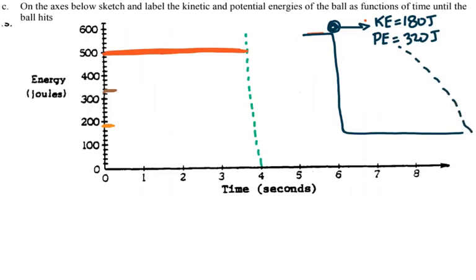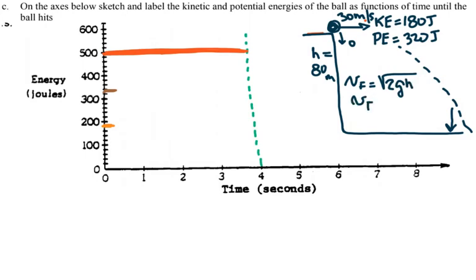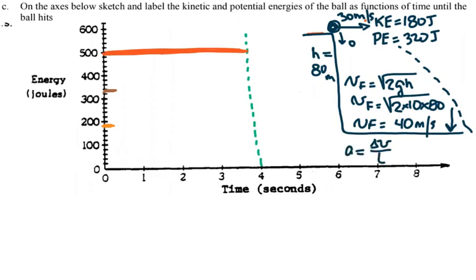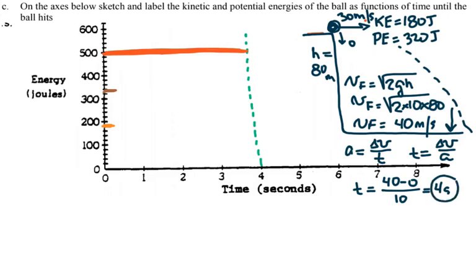The ball falls from the 80-meter cliff. Horizontal velocity is 30 meters per second; initial vertical velocity is zero and increases due to gravity. The vertical velocity when hitting the ground is the square root of 2 times 10 times 80, which equals 40 meters per second. Time to fall is 40 divided by 10, giving 4 seconds.